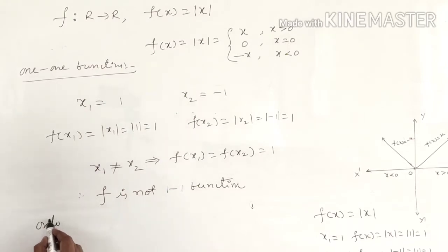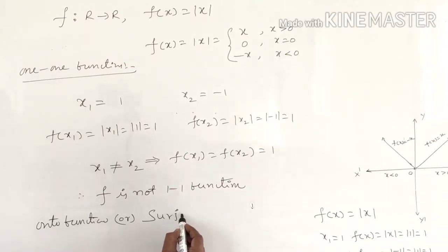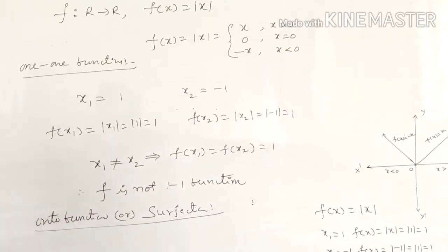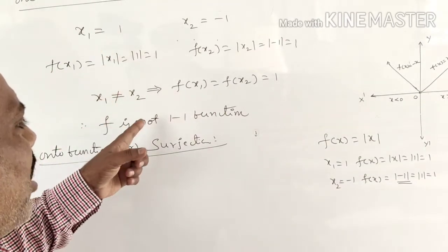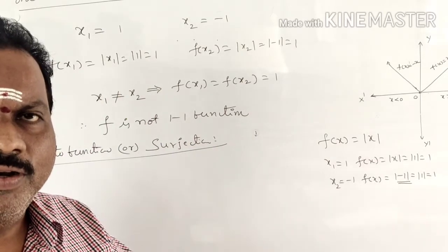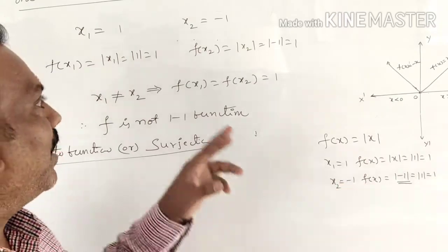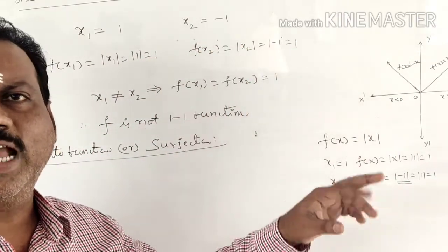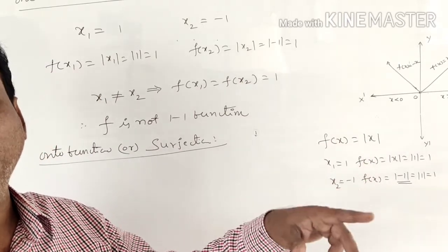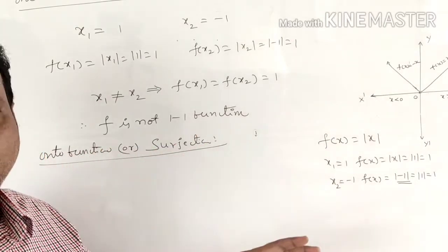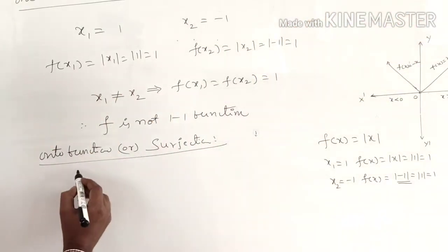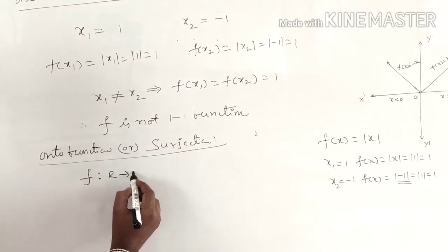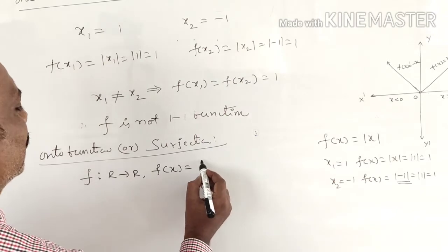Next we check the onto function, also called a surjection. The definition: range equals codomain. Note that this function is not one-one — it is many-to-one, because two or more elements of the first set share the same image: +1 and −1 map to +1, +2 and −2 map to +2, +√2 and −√2 map to +√2. Now for onto: f maps from R to R, defined by f(x) = |x|.